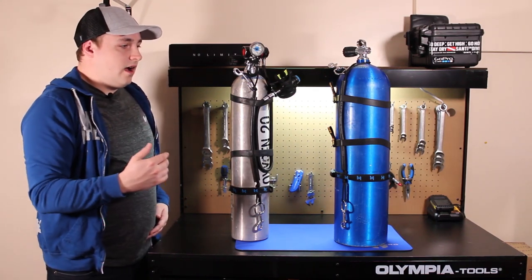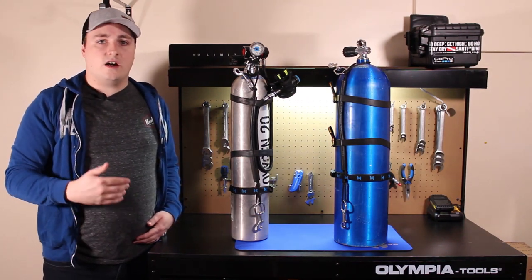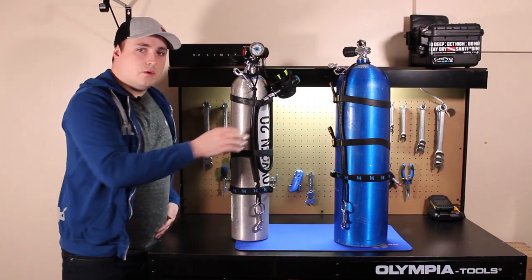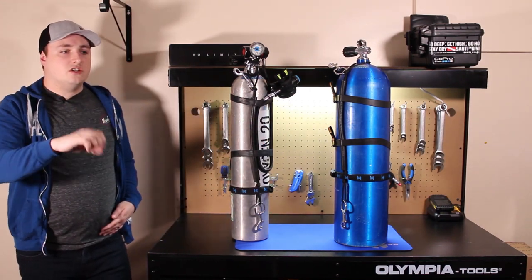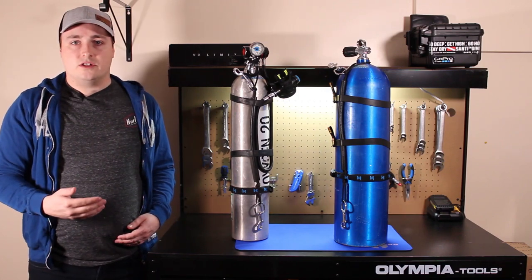This can also be used for other divers that are having an emergency as well. So if your dive buddy was to run out of air or somebody else on the dive was to run out of air, you have a redundant air source with a separate second stage and a separate first stage that you are able to give them to help them get out of an emergency situation.